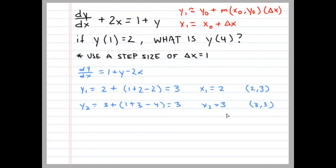And we're not at 4 yet, so we're going to do another step. Y₃ equals 3 plus 1 plus 3 minus 2 times 3 is 6. And this altogether equals 1. So x₃ is going to equal 4 now, because we're adding another step. Now we have x equals 4. Therefore, we conclude that y(4) is approximately 1.